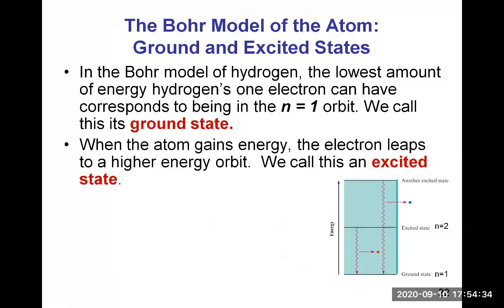When the atom gains energy, the electron leaps to a higher energy orbit, and we call this an excited state. In the schematic here, n equals two represents the first excited state, but there are many other excited states above it, symbolized by n equals three, n equals four, et cetera.